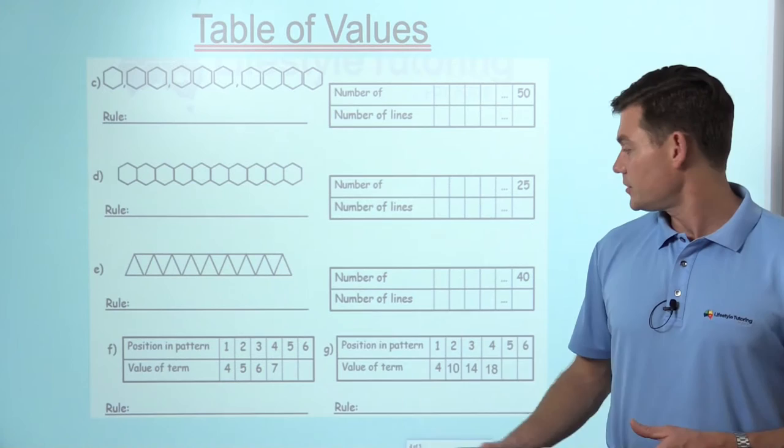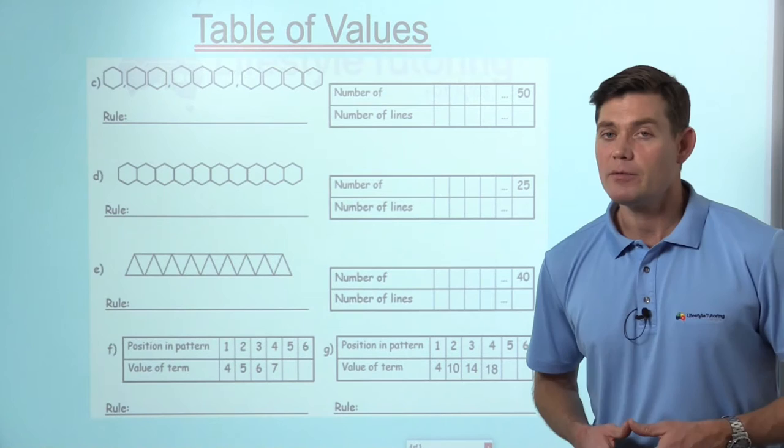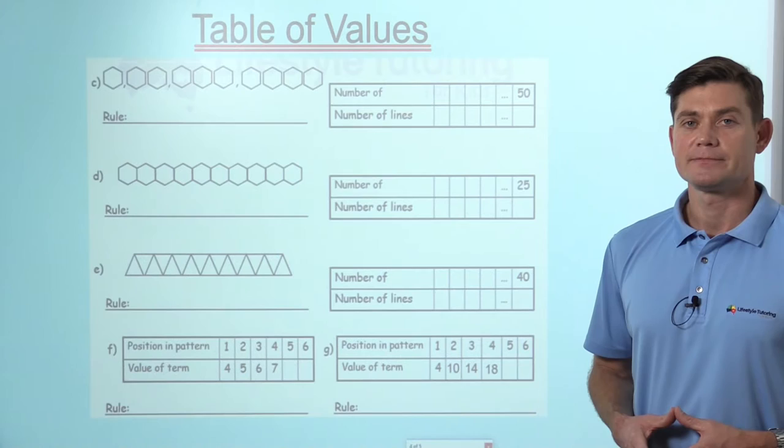Down the bottom here, you might want to use an abbreviated version of PIP for position in pattern and VOT for value of term when you're trying to describe your rule. Good luck with that. I will see you probably in about five minutes. Good luck.